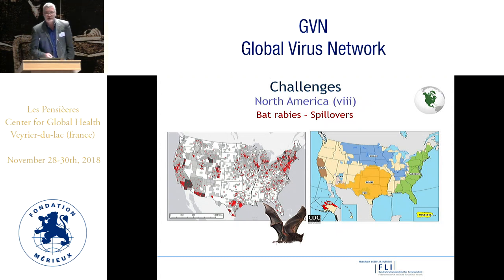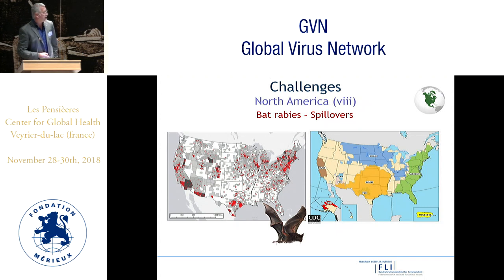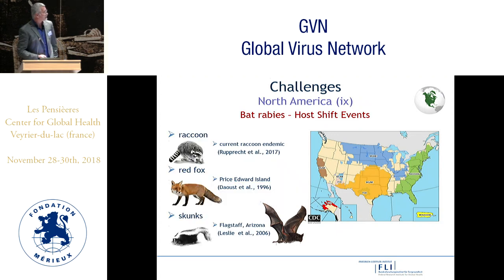Bat rabies in the Americas is another challenge. Variants of rabies virus are circulating in almost all bat species in the Americas, and for reasons unknown there is a significant number of spillovers of these rabies viruses into domestic animals, wildlife and humans compared to other parts of the world. These spillovers can become sustained and even result in a host shift, as documented for raccoons, red foxes and skunks in the United States.